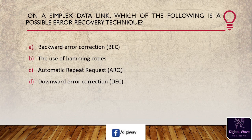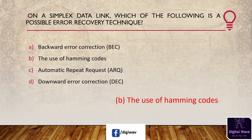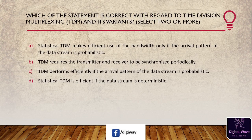Next question: on a simplex data link, which of the following is a possible error recovery technique? Options are: backward error correction, use of Hamming codes, automatic repeat request, and forward error correction. The answer is the use of Hamming codes — Hamming code is an error recovery technique that can detect and correct errors; it was developed by R.W. Hamming.